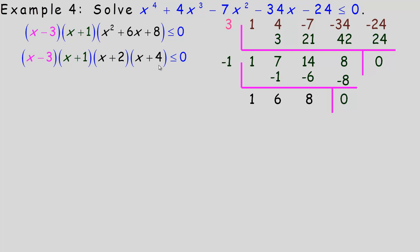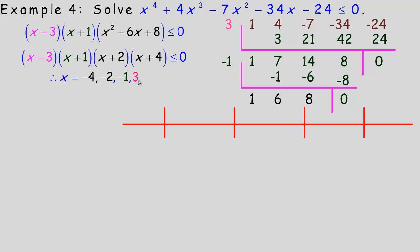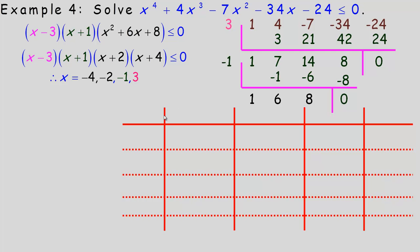The quartic is now completely factored. The roots or x-intercepts are negative 4, negative 2, negative 1, and positive 3, listed left to right. These four numbers break the number line into five intervals: below negative 4, between negative 4 and negative 2, between negative 2 and negative 1, from negative 1 to positive 3, and greater than 3. We list all four factors and their product in the sign table.